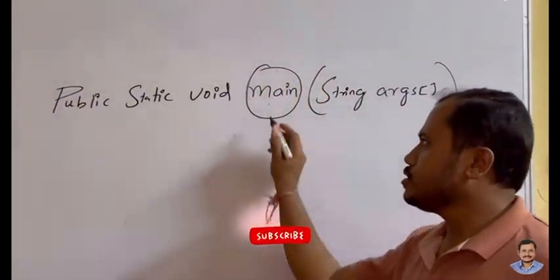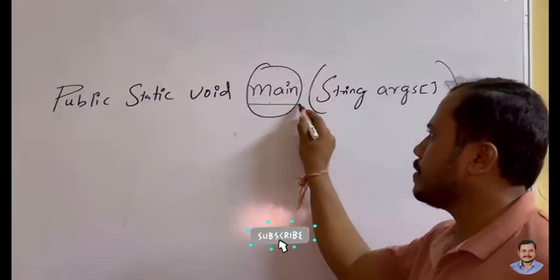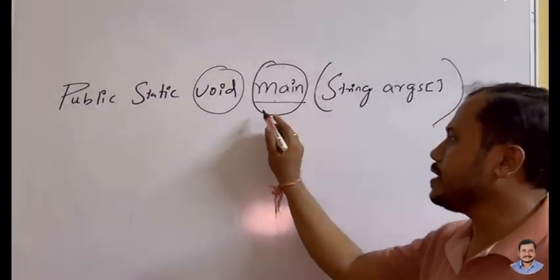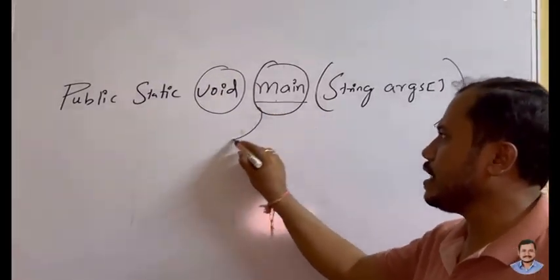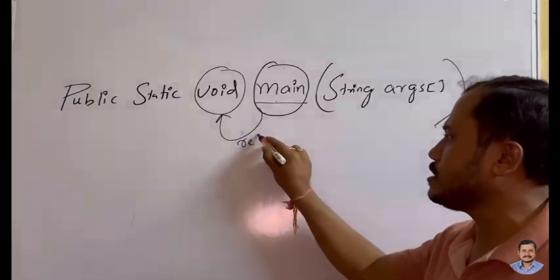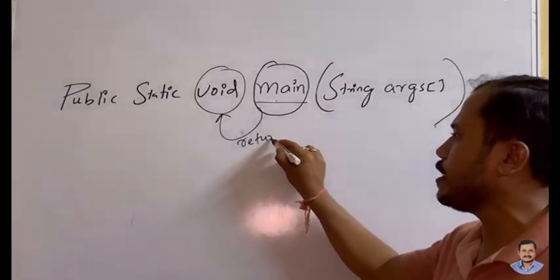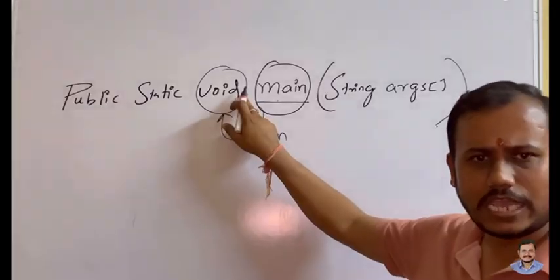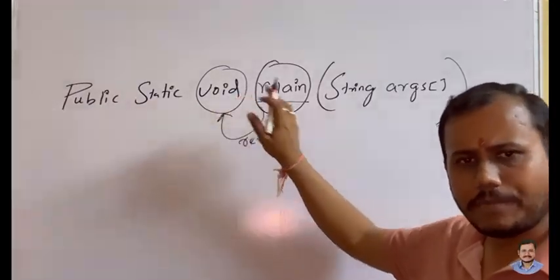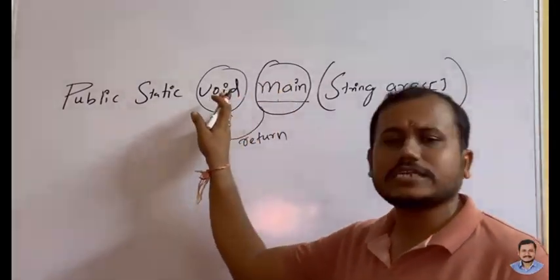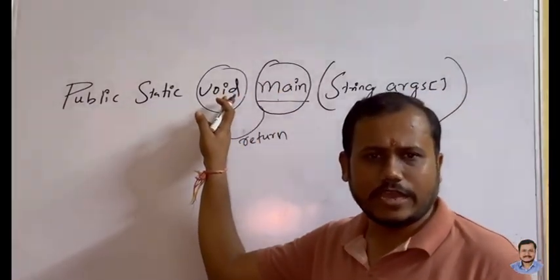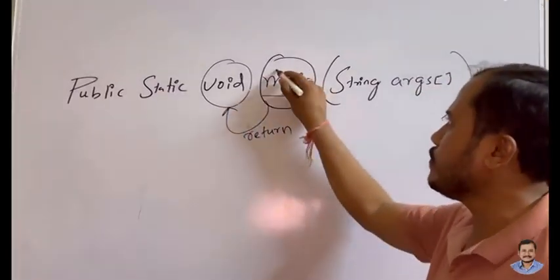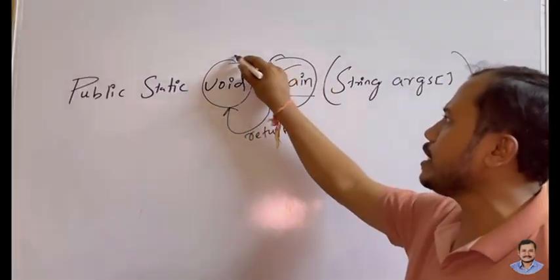So your program execution starts from the main method. Now, what is this void? If a method doesn't have any return type, if a method doesn't want to return anything, we need to write void before the method. In Java, by default, the main method doesn't have any return value, so that's why we write void before the main method.